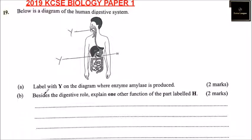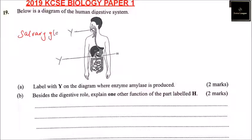Part A: labeled with Y on the diagram where enzymes are produced. For Y, we can say this is the salivary glands, and here we can say it is the pancreas. The pancreas and salivary glands produce the enzyme amylase.